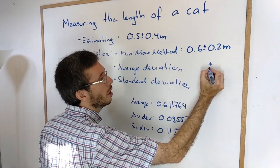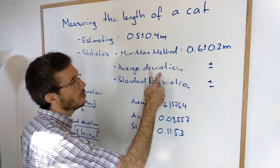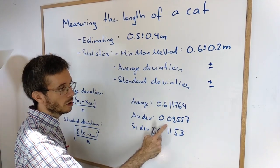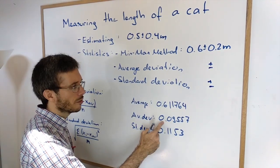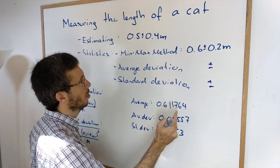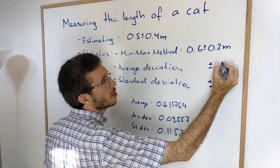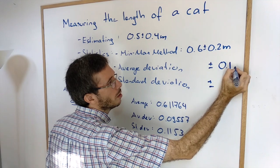Well for the average deviation method we simply copy the value over. And as before I prefer to do only one sig fig. So 0.01. Average deviation plus 0.01 meter.